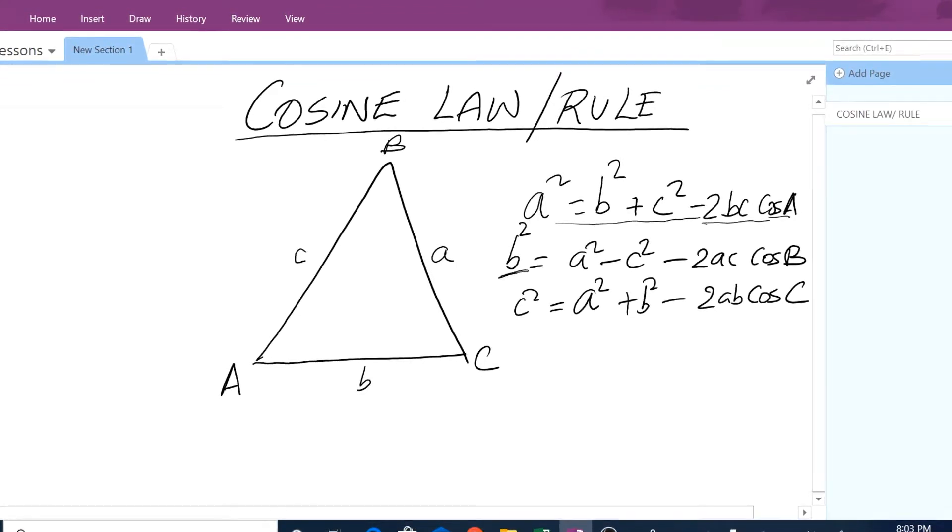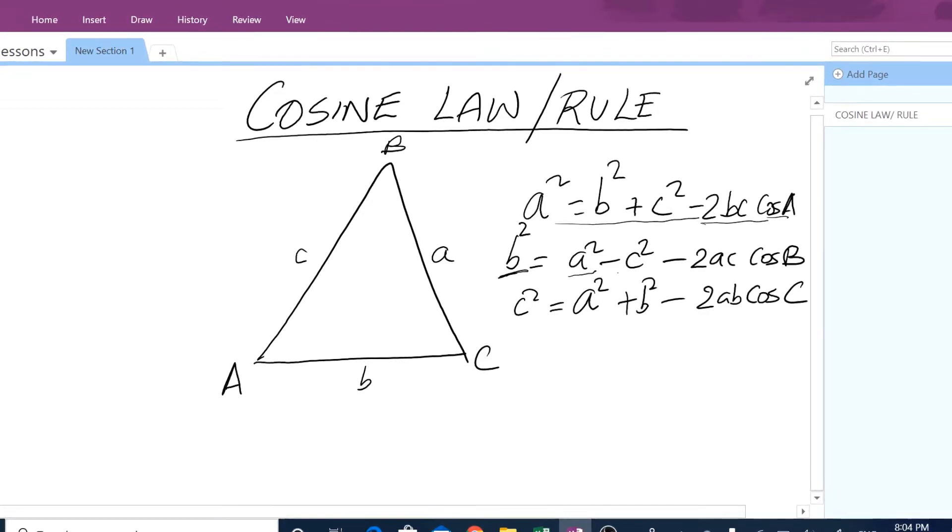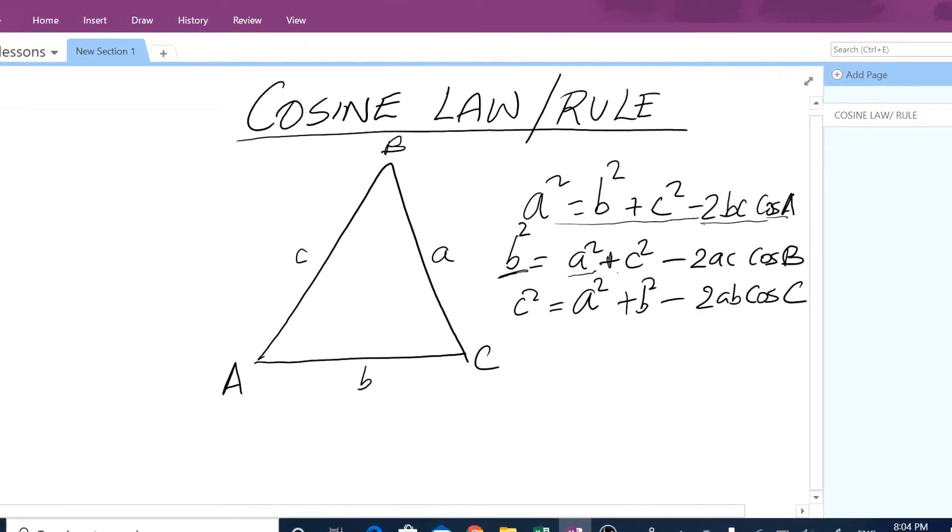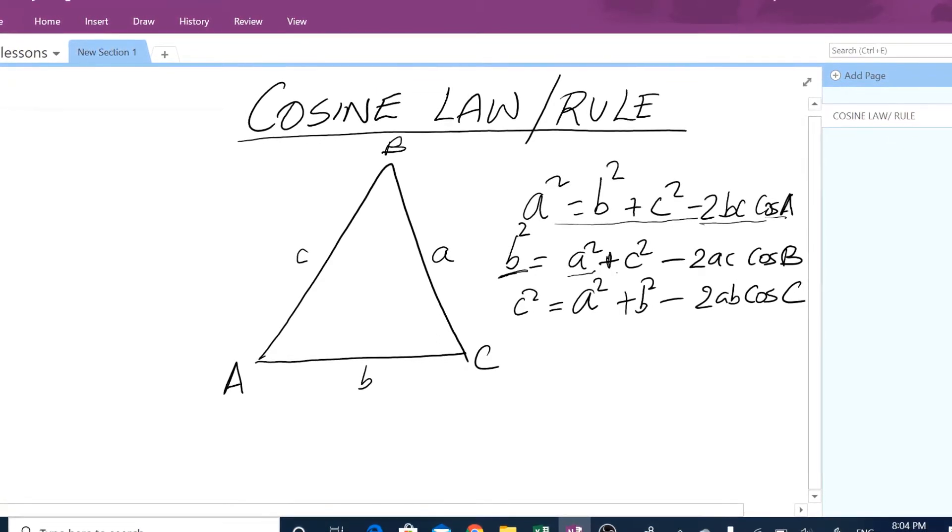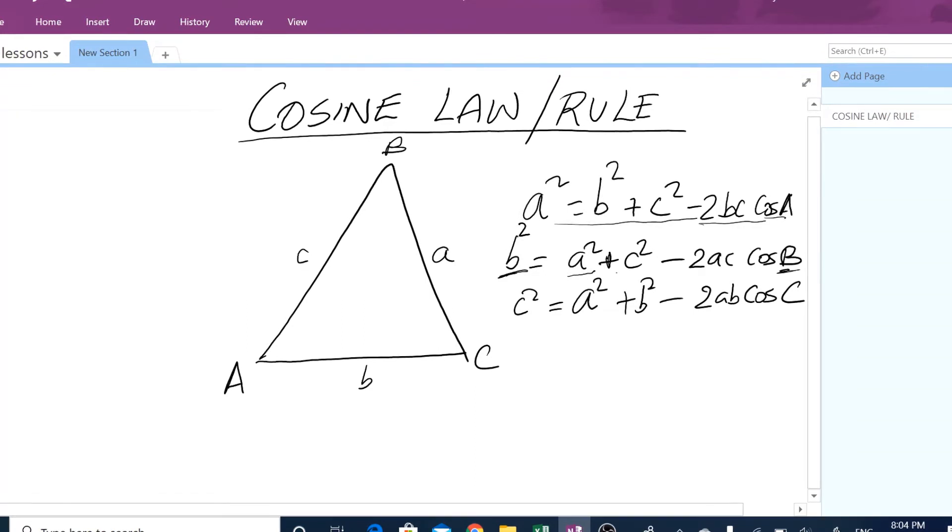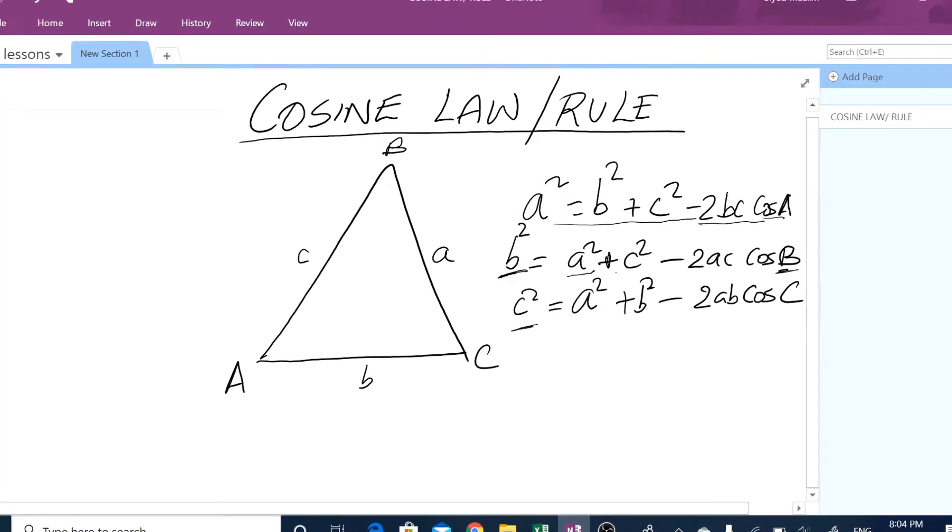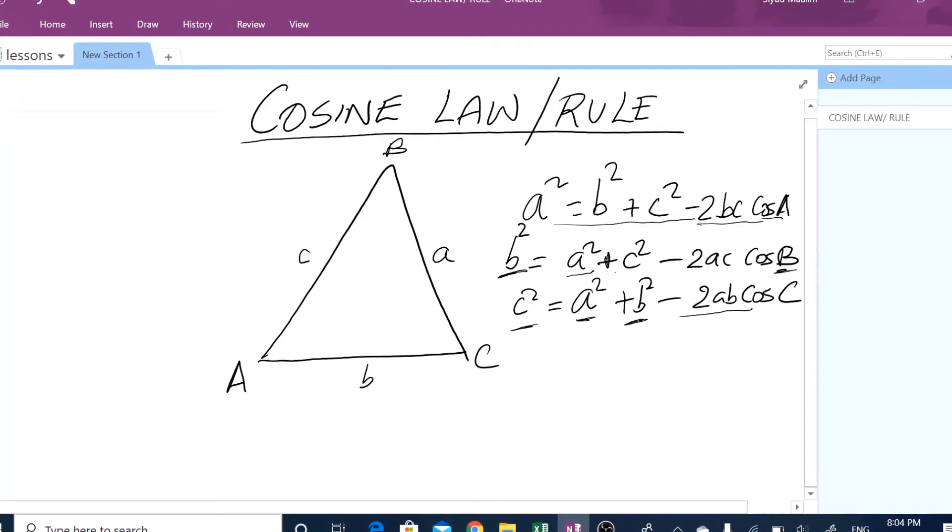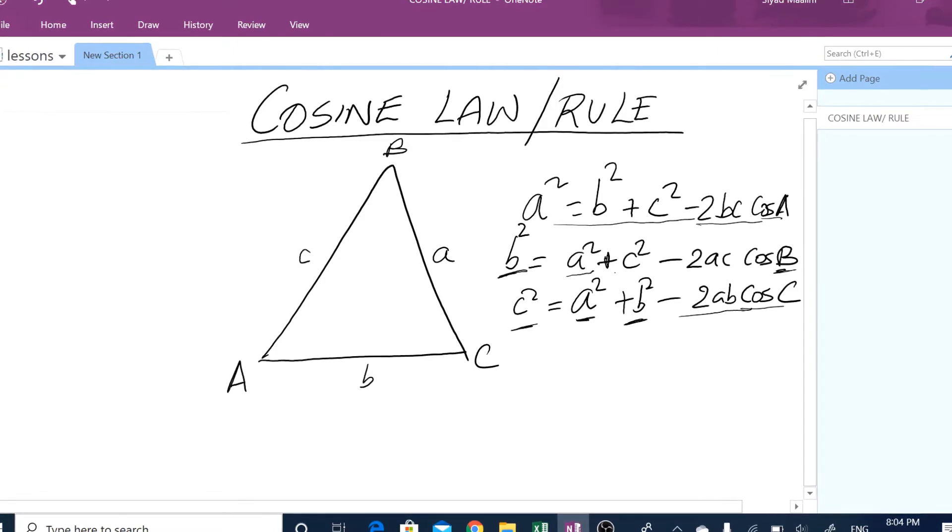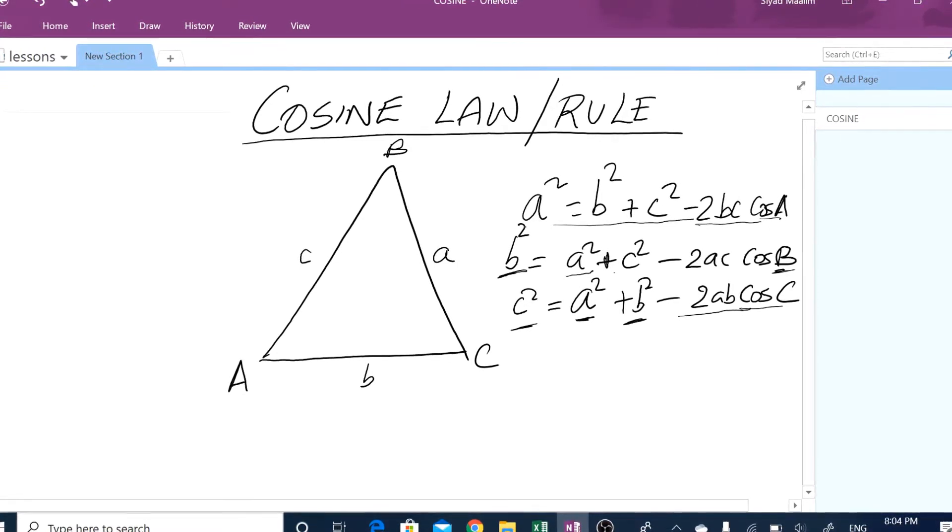you could use b squared equals a squared plus c squared minus 2ac cos B. Or alternatively, you can use c squared equals a squared plus b squared minus 2ab cos C. In fact,